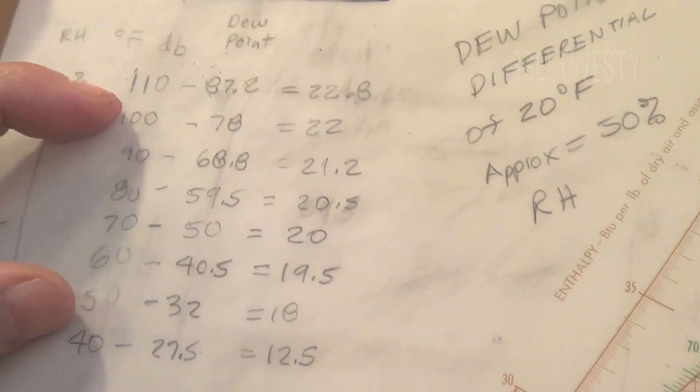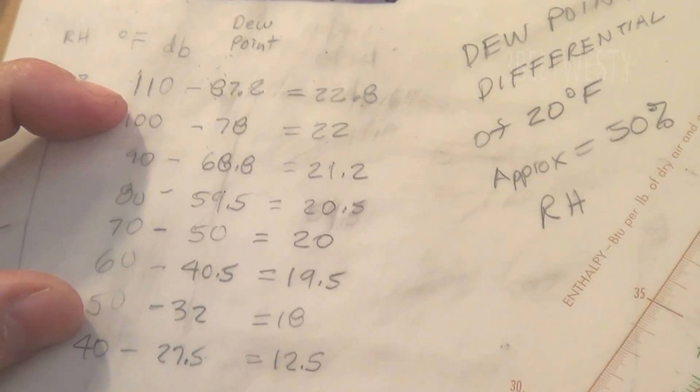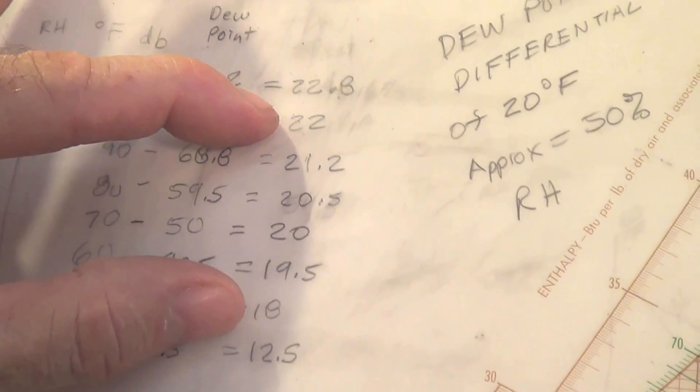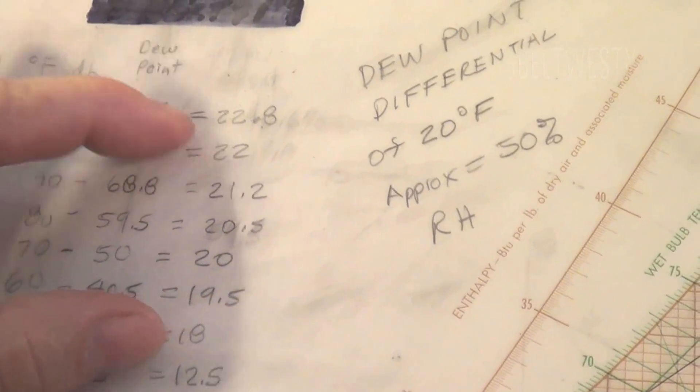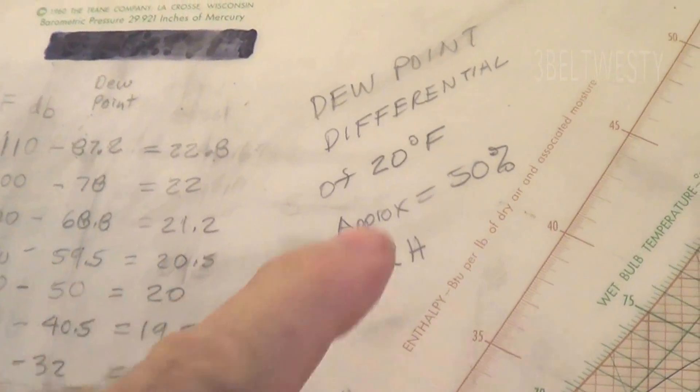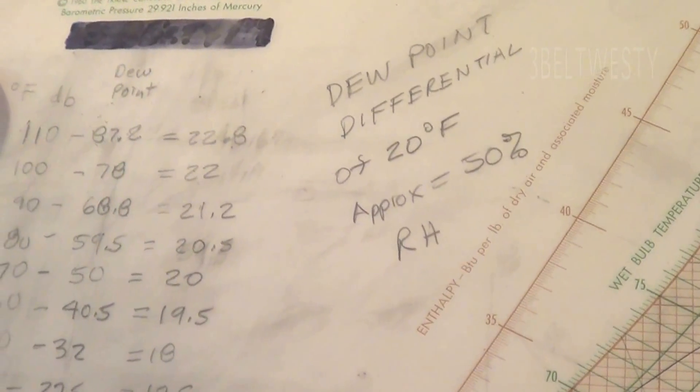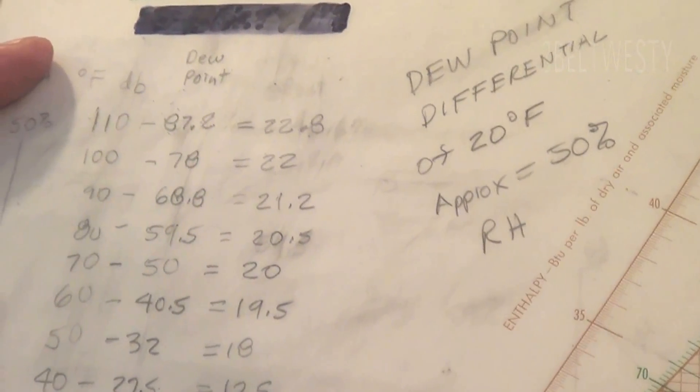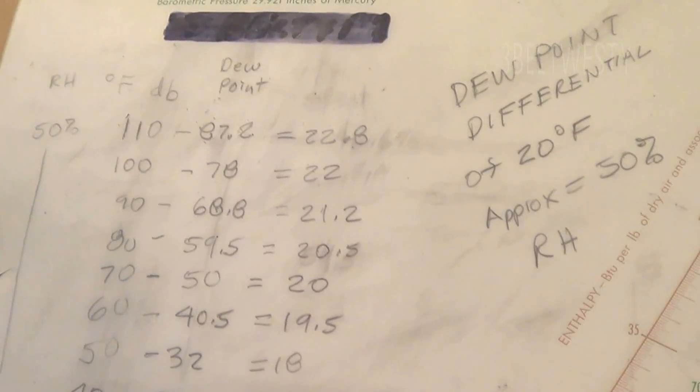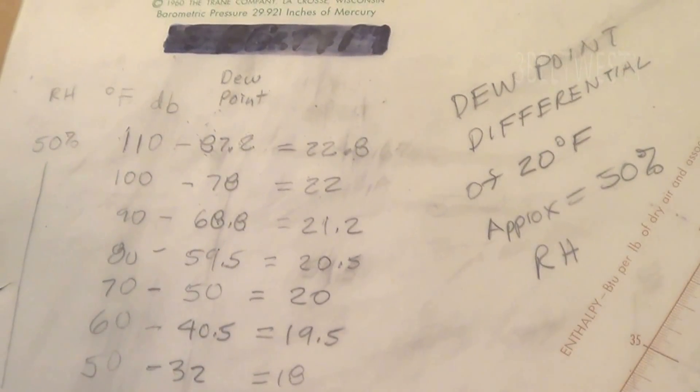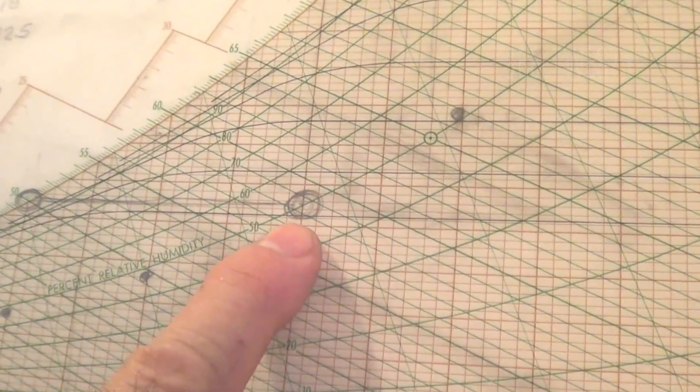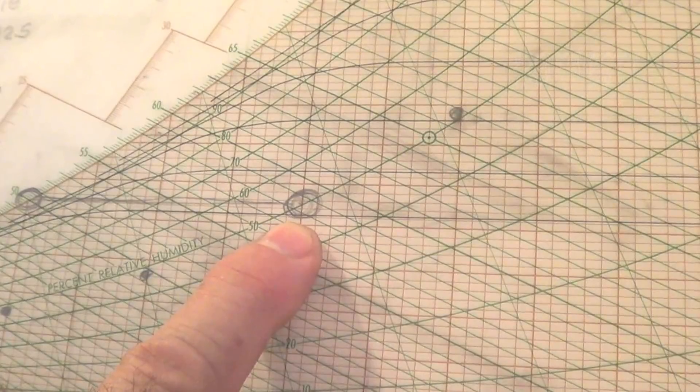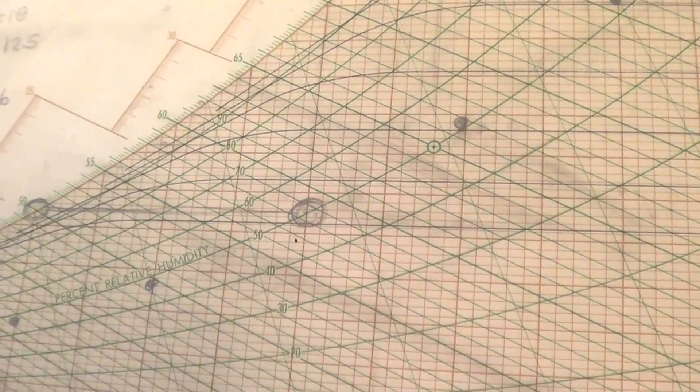So over a range of say 50 to 100 degrees Fahrenheit, you have about roughly a 10% error if you just assume that the differential is 20 degrees F. And this was actually used in some earlier control devices in HVAC because of this property of the 20 degrees F for 50% RH for controlling humidity. It's just kind of something the way it happened.